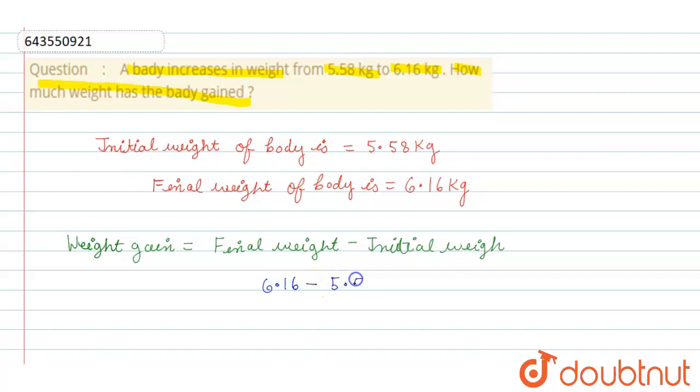So 6.16 minus 5.58. Sixteen minus eight is eight, remaining zero. We carry one from six. Ten minus five is five.